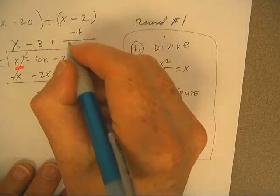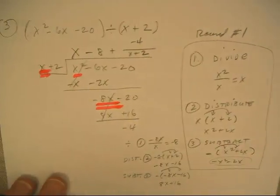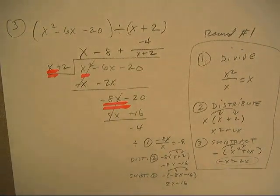Always stick your remainder over the divisor there at the end. On number 3 that should do it, so we should be good on that one: x minus 8 plus negative 4 over x plus 2.